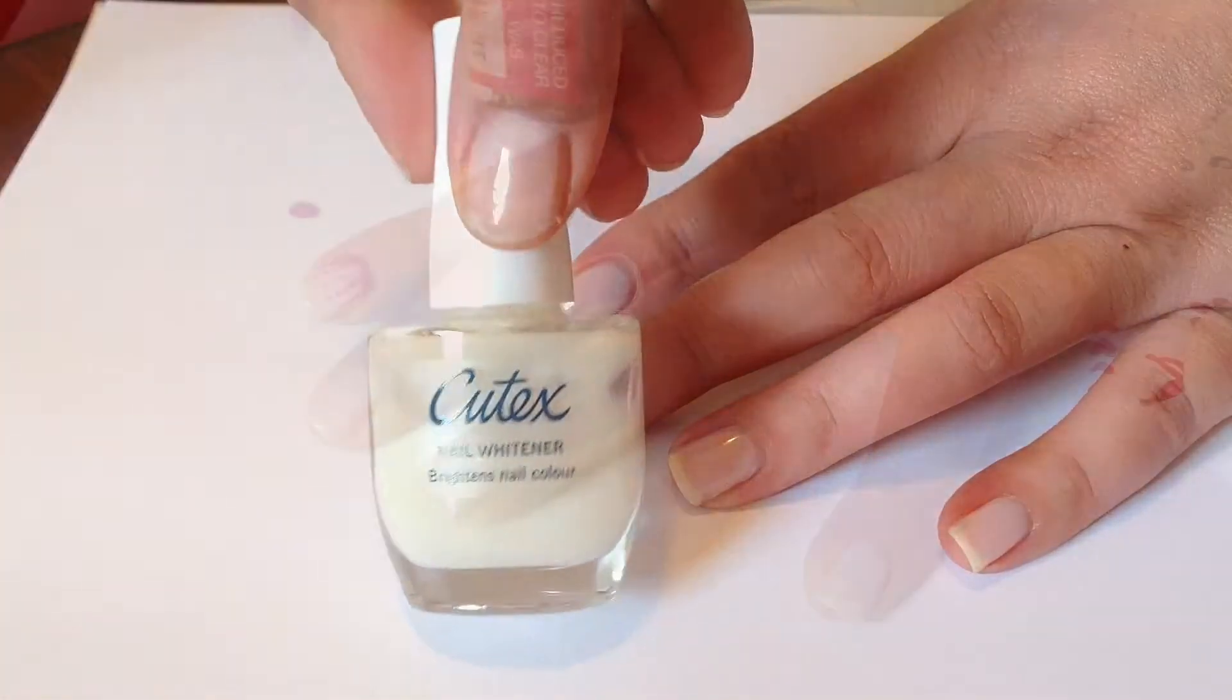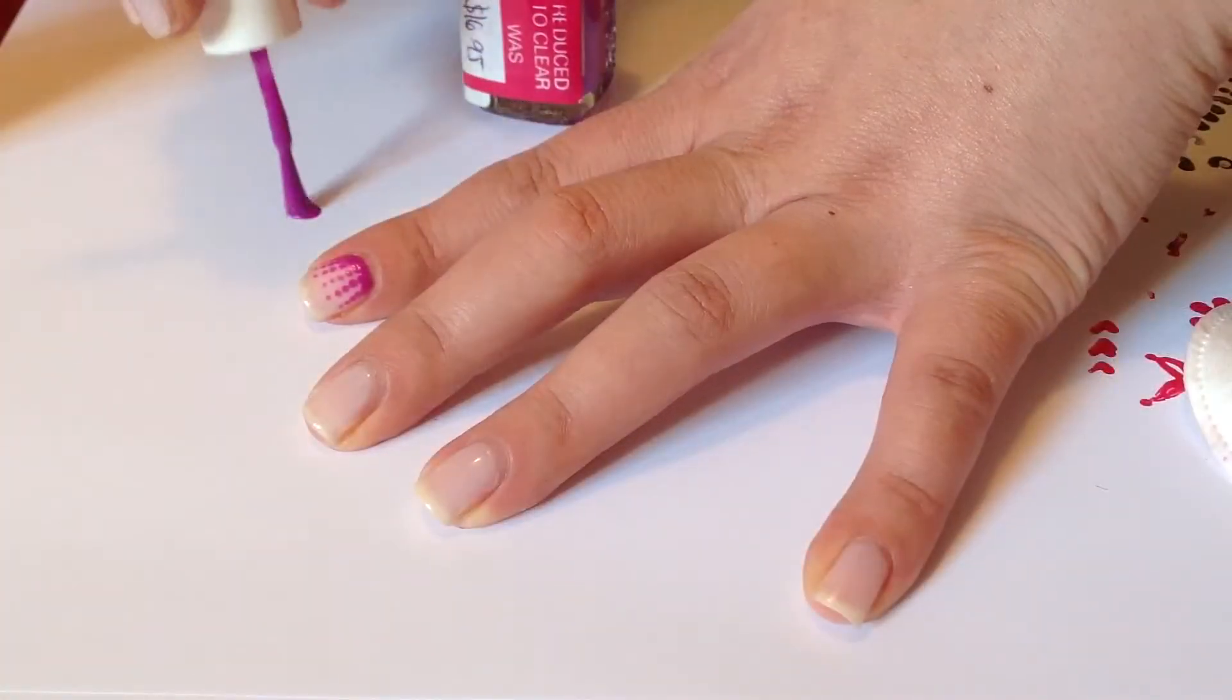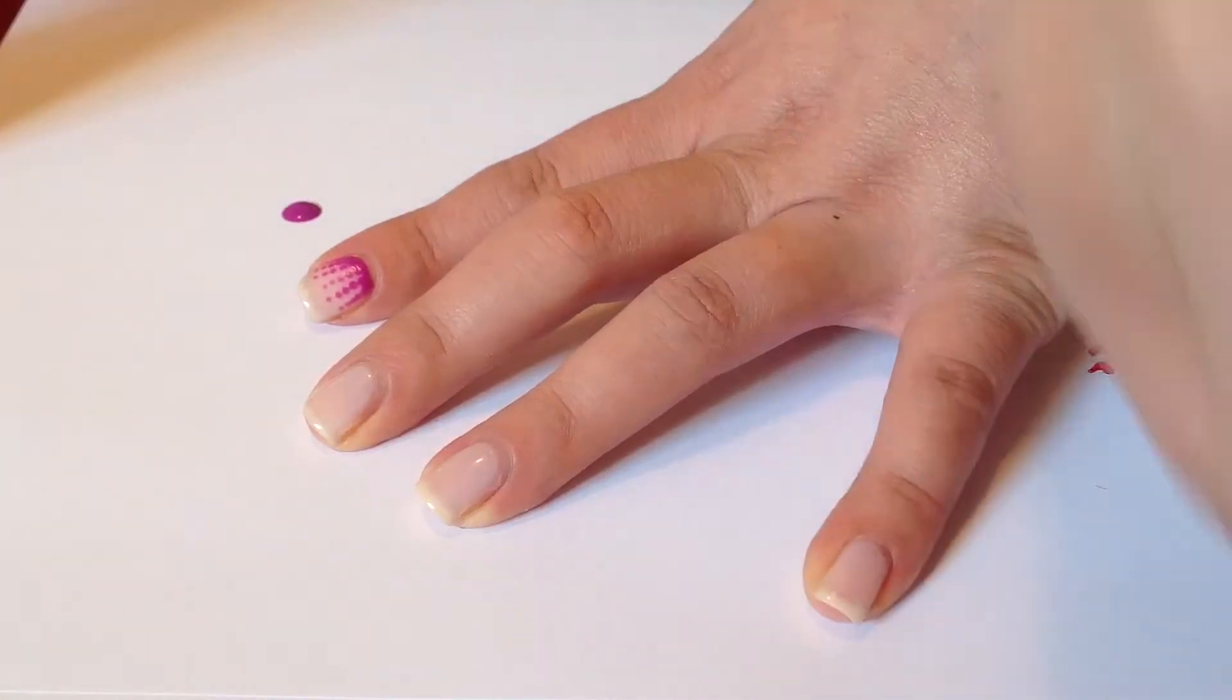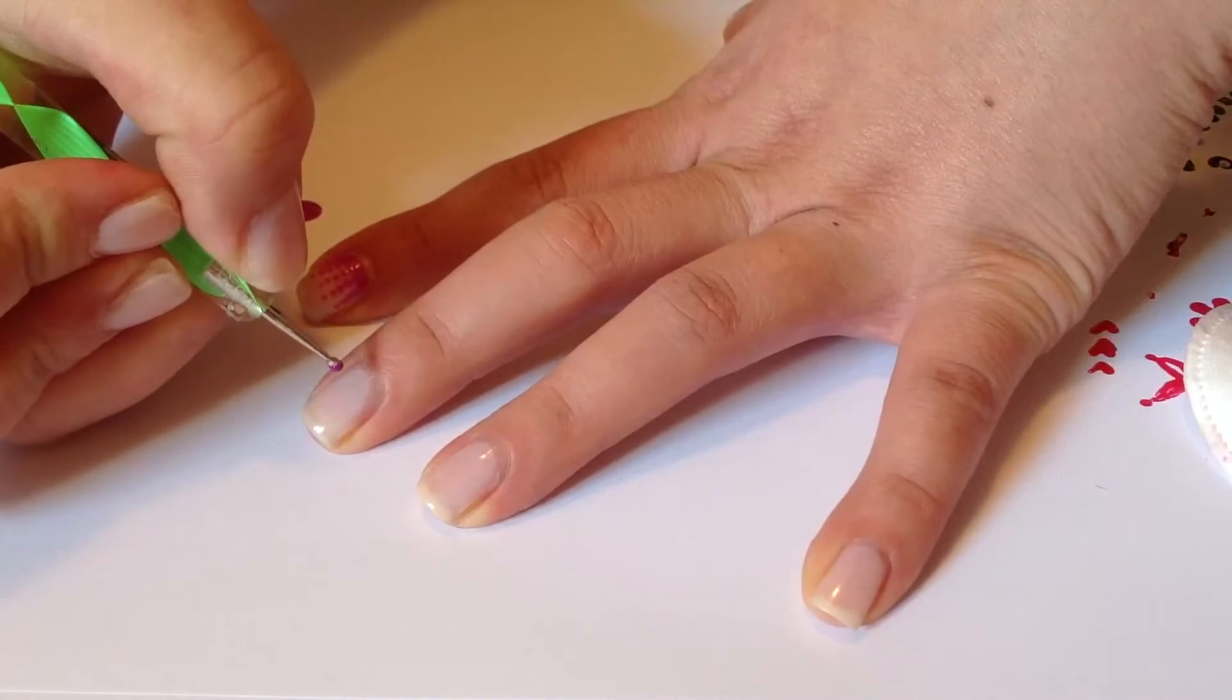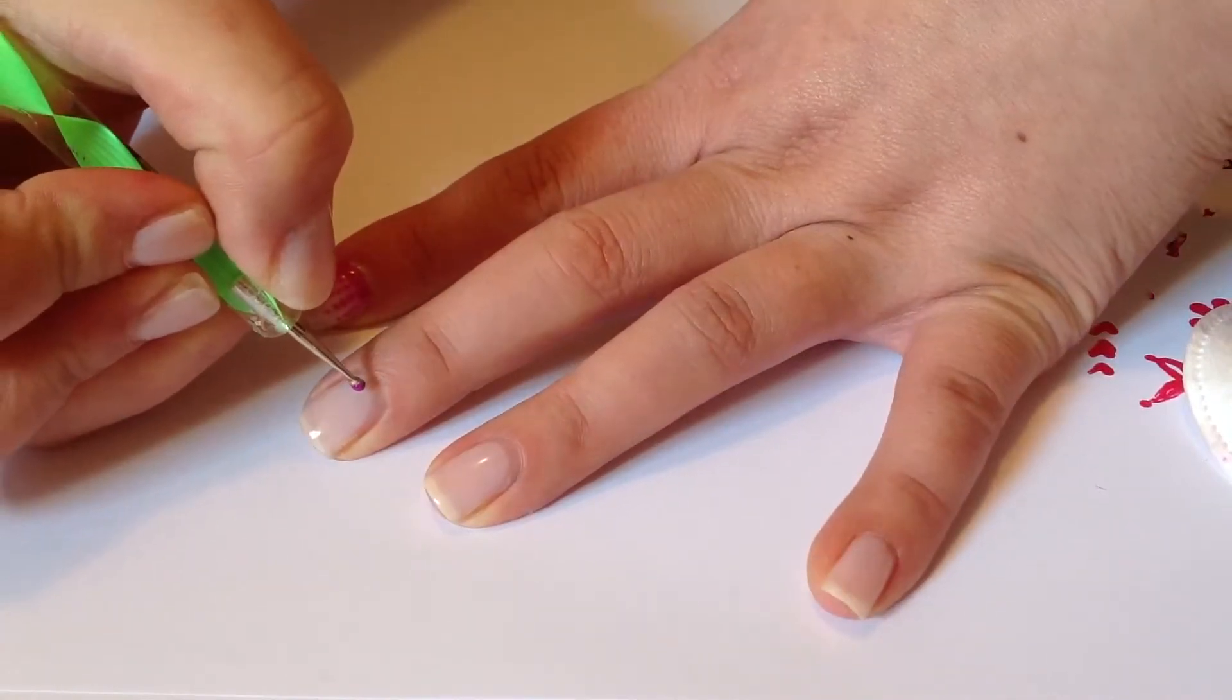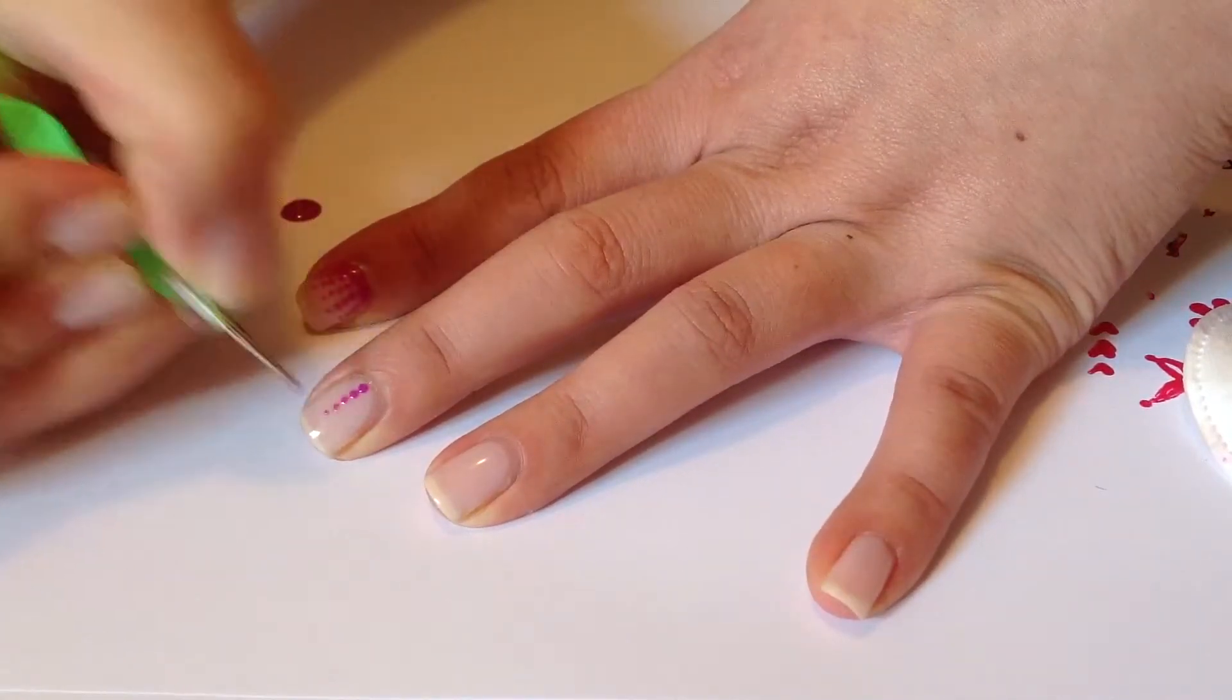Hi everyone. For today's tutorial, I started off with Cutex and did three coats. Once that's dried, with your dotting tool and a bright purple nail polish, you're going to do little dots that get smaller as you go up the nail.